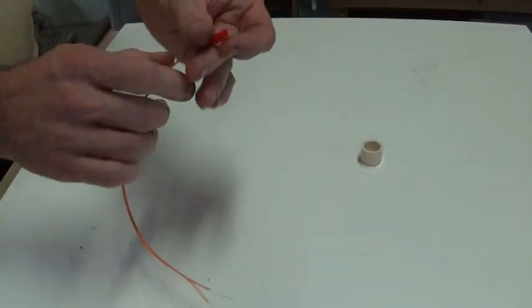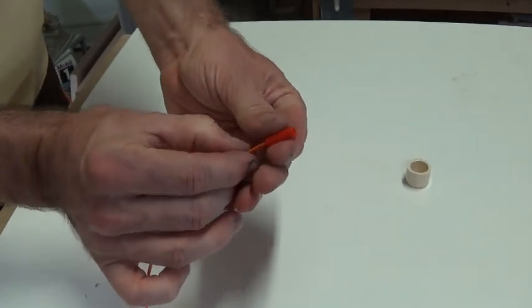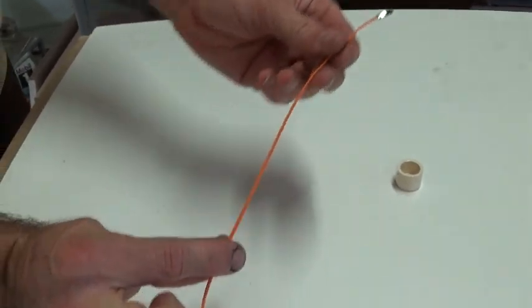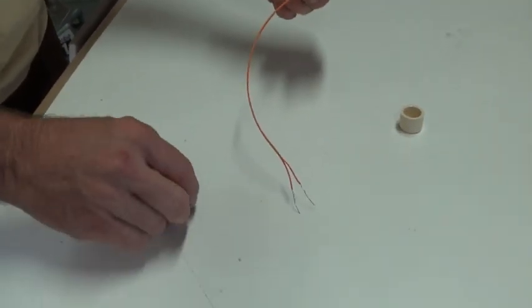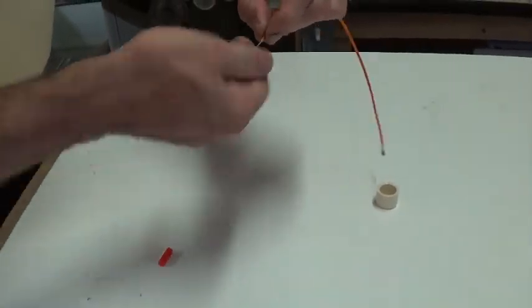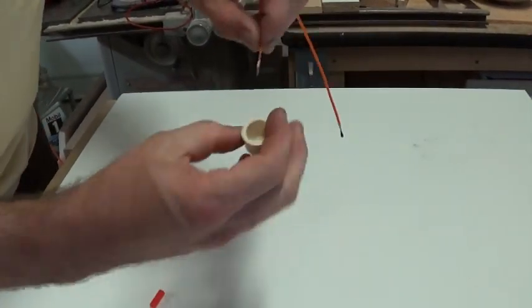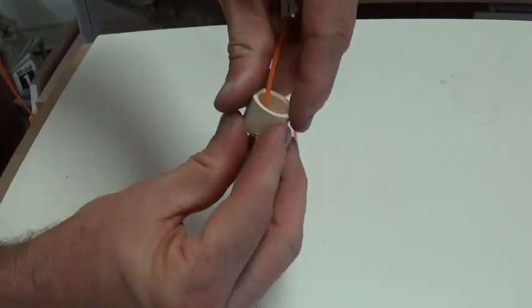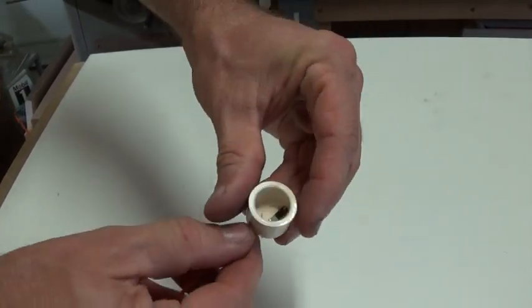And then we want to take off this little plastic cap. It just slides off and we'll use that in just a minute. Now we'll just twist the wires together just to get them through the hole and we'll feed that down into the cap.